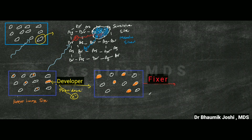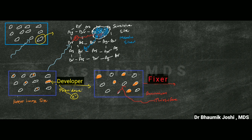Once the film is placed in the fixer, the active content of fixer — ammonium thiosulphate — will go and act on the crystals which were not acted upon by the x-rays. When it acts with these silver crystals, it leads to dissolution of those unexposed crystals, forming silver thiosulphate.